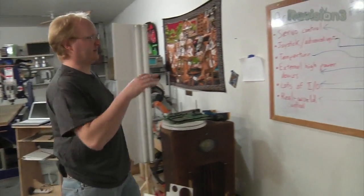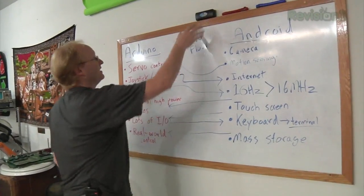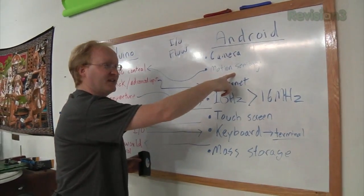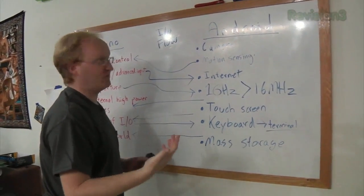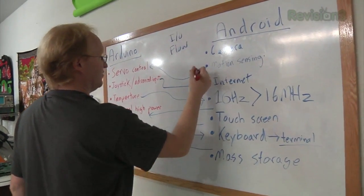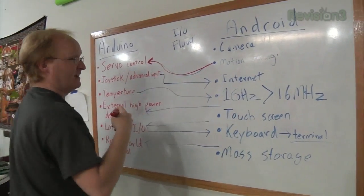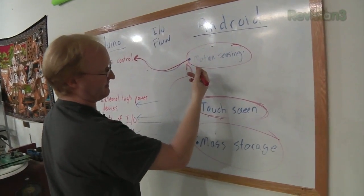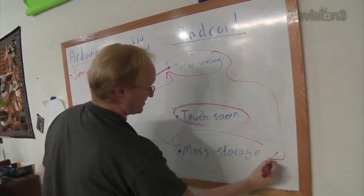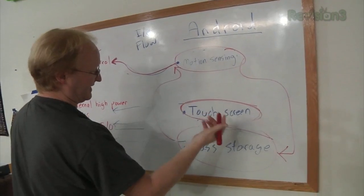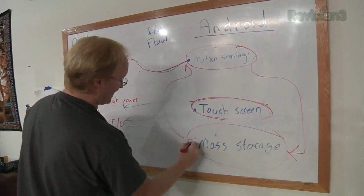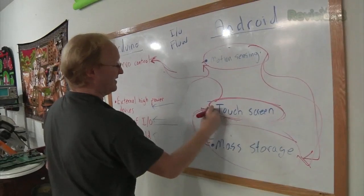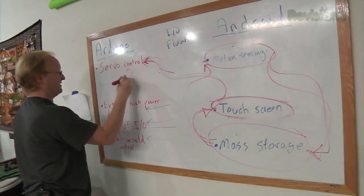Now that we have a project in mind, we can nail down how the Android-Arduino synergy will work. For motion sensing, we can put the Android phone in a car, drive around, and use the accelerometer to log the data so we can see what motion we're going to have. The motion sensing of the Android will then be used to drive servos to simulate the car motion at home in a little rocker that we make. We'll need to write an app for Android that does motion sensing and logs the data to mass storage. Then we'll have another program that uses the touchscreen as a UI to drive the rocker. Sense motion, store data, user interface program, drive servos — and then your baby is rocked to sleep.